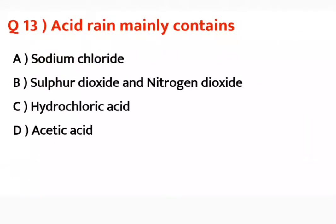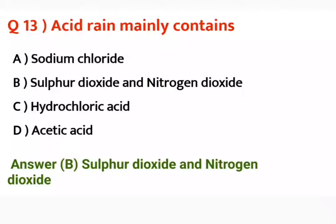Question number thirteen: Acid rain mainly contains — options: sodium chloride, sulfur dioxide and nitrogen dioxide, hydrochloric acid, acetic acid. Correct answer is sulfur dioxide and nitrogen dioxide.